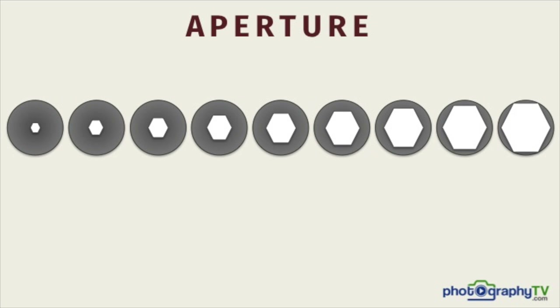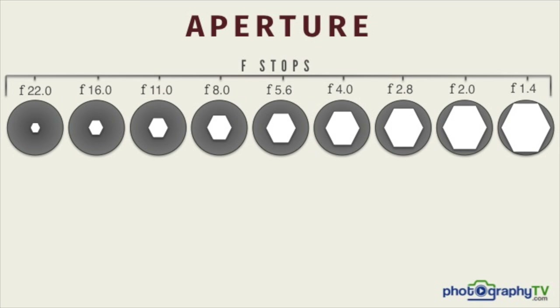Let's pull up this diagram and show you all the different aspects of aperture. It starts by understanding what's called f-stops. You can see on this diagram f-stops go from f22 down to f1.4. A simple way to think about it is that f22 is a very narrow aperture and f1.4 is a very wide aperture.